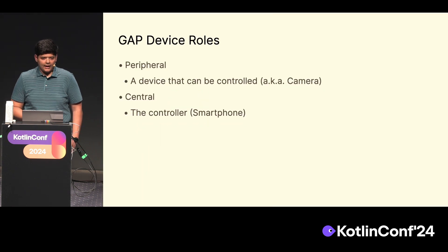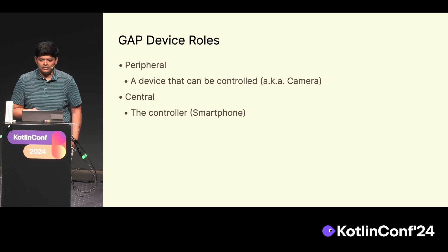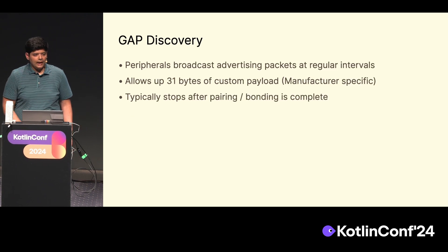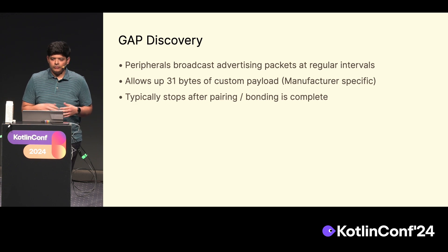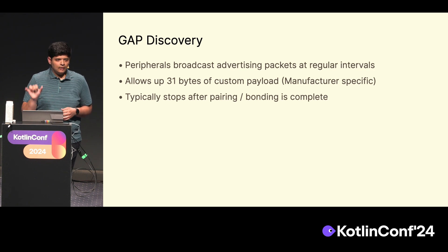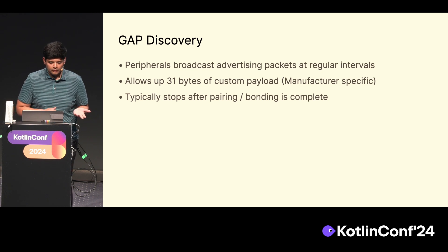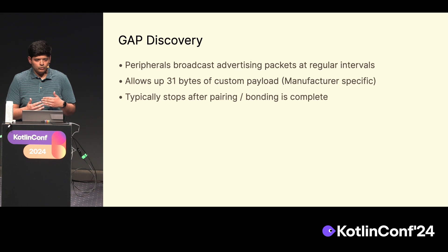GATT has primarily two device roles. The first is called the peripheral device — this is the device you typically want to connect to and control. Then there's the central, which is the controller, typically a more fully featured device that has the smarts to control the peripheral — in our case, the smartphone. The peripheral device keeps advertising its presence at a regular frequency with about 31 bytes of manufacturer-specific data you can use to ensure this is the device you want to pair to. Once the pairing and bonding process is complete between these two devices, advertising can stop and the normal GATT protocol resumes.